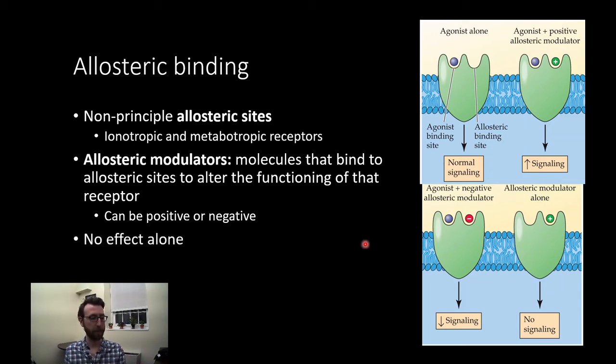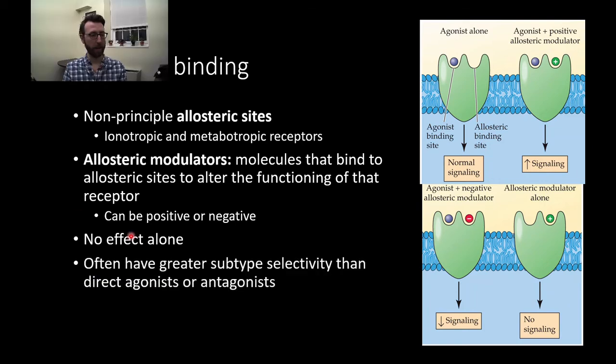It's certainly worth mentioning that these produce no effect alone. An allosteric modulator binding in the absence of a direct agonist or the endogenous ligand is going to do nothing. It will not activate the receptor on its own. It's just a modulator. It's going to change the way that that receptor works in the presence of the principal binding site being occupied. These often have greater subtype selectivity than direct agonists or antagonists, so they tend to be a little bit more targetable.